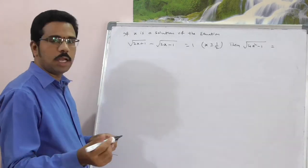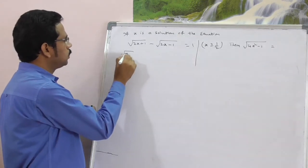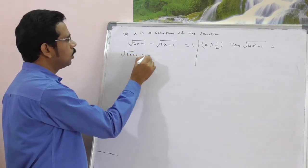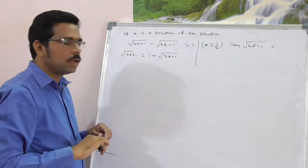Just use the algebraic simplification here. This is the given expression. From here you can write 2x plus 1 is equal to 1 plus square root of 2x minus 1.